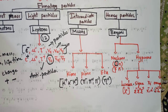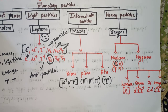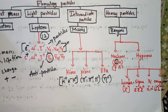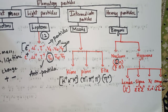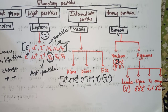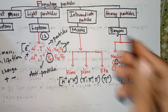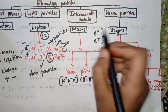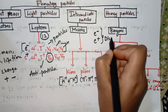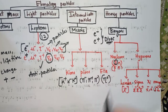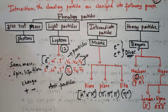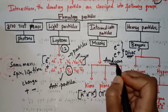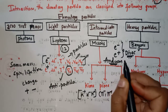This classification is based on mass, spin, and nature of interactions. Remember that particles and antiparticles have the same mass, spin, and lifetime but they have opposite charge. For the electron, the antiparticle is the positron — this was predicted by Dirac and discovered by Anderson.